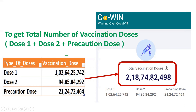But if you see, we can't directly add these values because they have commas. We can't add comma-separated strings directly, so we need to remove the commas and replace them with nothing. So the requirement is: remove the commas from the comma-separated values and then add the dose fields together to get the total number of vaccination doses.